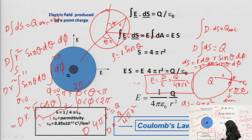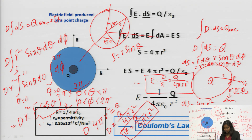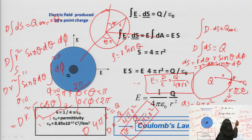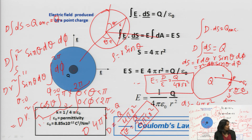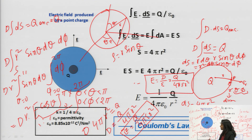If we need to find E, we can write E equals Q divided by 4πr². You can use the value of ds directly — we all know that the area of any sphere is equal to 4πr². So you can use it directly, or alternatively you can find the value of ds in the detailed way shown.